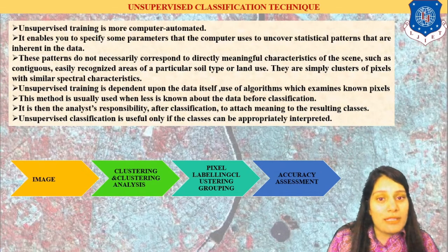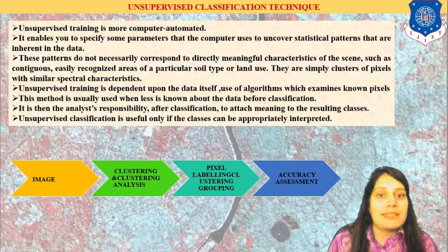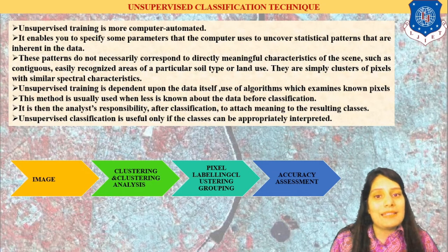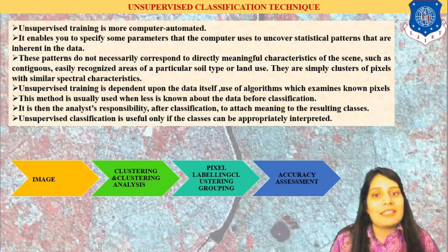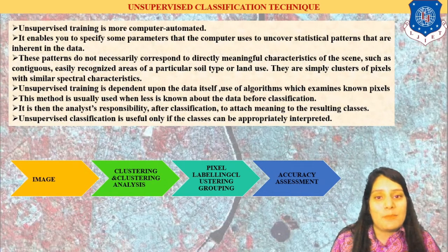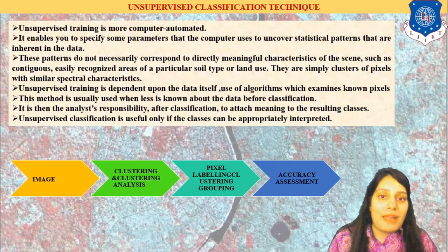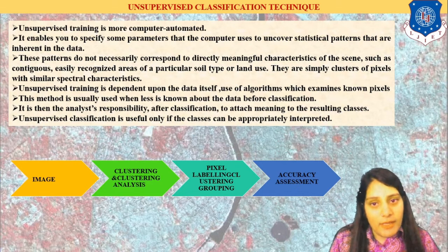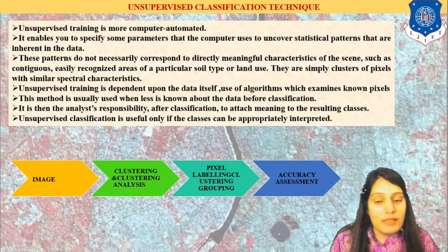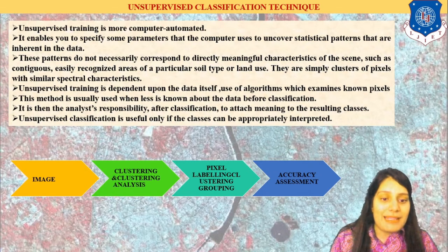Next, we discuss unsupervised classification. Here, the software itself takes the automated classes by itself. When I give the input of the image, the software will identify the various classes and take the classes accordingly. Sometimes it happens in unsupervised that it is misclassified. If it is misclassified, we have to reclassify and give the classes according to the pixel values and neighboring pixel values, and we check the accuracy assessment report. This is unsupervised classification. In supervised, classes are given by us; in unsupervised, the software takes the classes. The process involves image input, clustering of pixels — natural clusterings — then pixel labeling, and finally accuracy assessment.